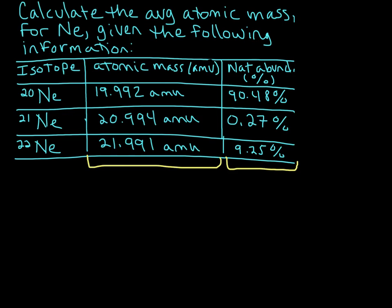Neon-20 has an atomic mass of 19.992 amu. I've rounded these a little bit, and the natural abundance is 90.48%. All of these are listed similarly. Neon-21 is 20.994 amu and 0.27%.